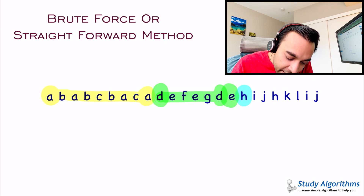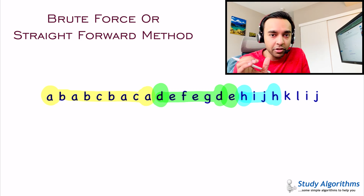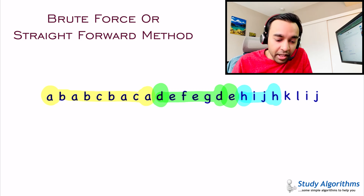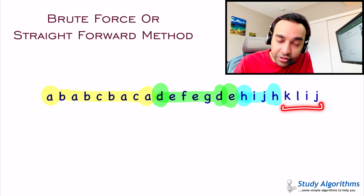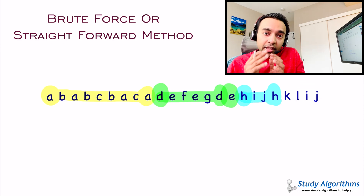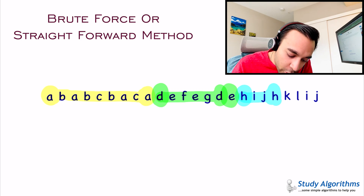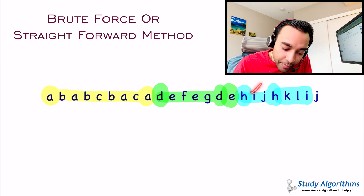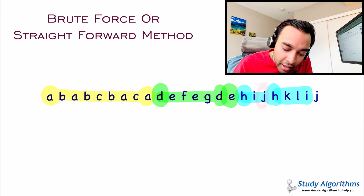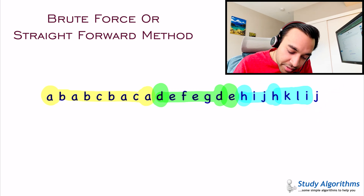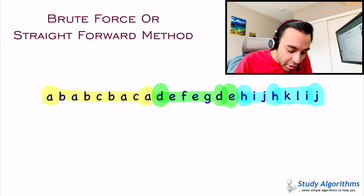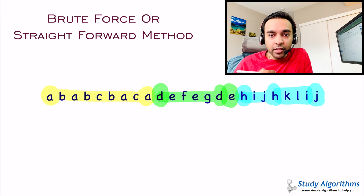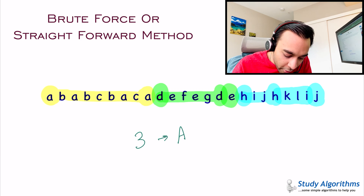You still have part of the string remaining, so let's make more partitions. Start with character H and find its last occurrence — that defines the minimum size of the third partition. Next, check I — you find it further in the string, so extend the partition to include that I. Then check J — you find it further as well, so extend the partition to include that J. You have now covered the entire string, and hence found all three partitions. So this string can be split into a maximum of three partitions.